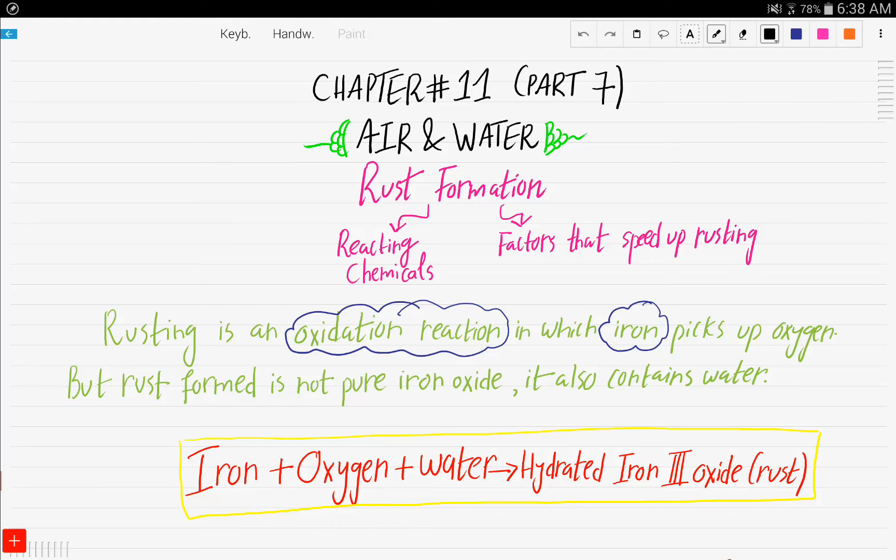Hello and welcome. This is part number 7 of chapter number 11, air and water. In this video, we will be talking about rust formation, the reacting chemicals that are needed for rust to form, and the factors that speed up and accelerate the rusting process.